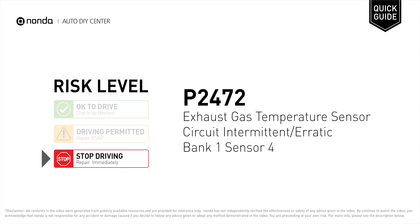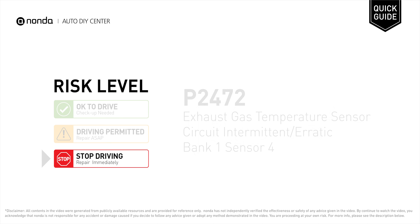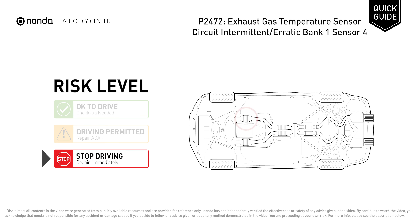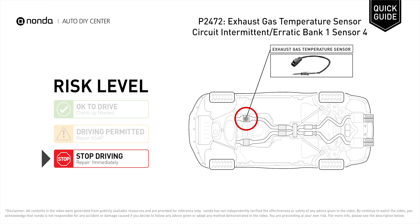P2472 is a diagnostic trouble code for Exhaust Gas Temperature Sensor Circuit Intermittent or Erratic, Bank 1 Sensor 4. Under this circumstance, stop driving and repair your vehicle immediately. It indicates the sensor signal voltage signal return is intermittent within specification.